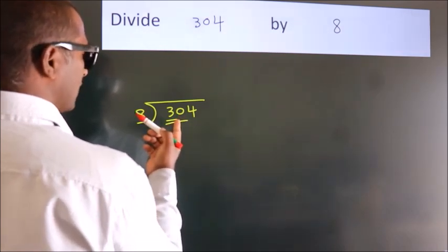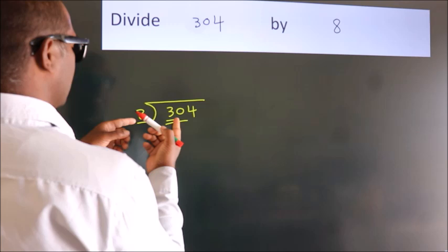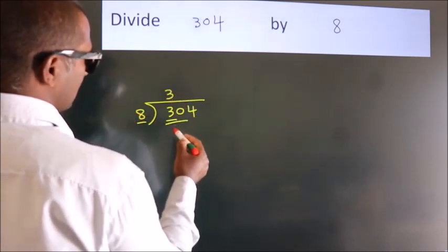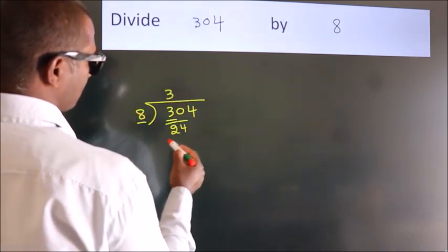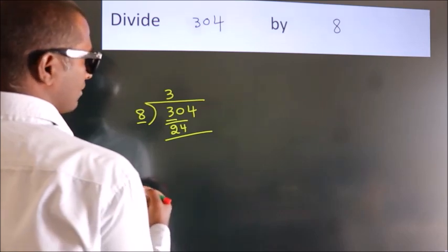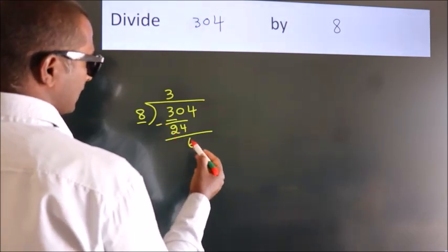A number close to 30 in the 8 table is 8 threes, 24. Now, we should subtract. We get 6.